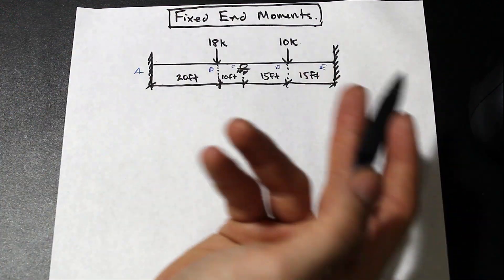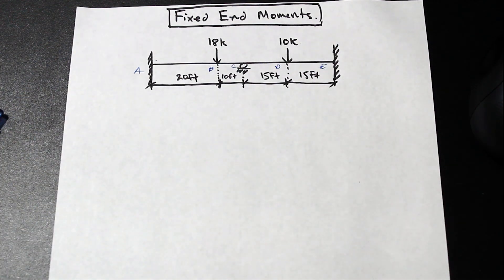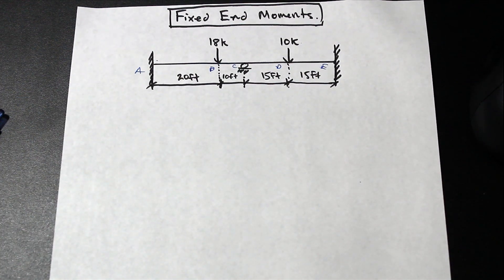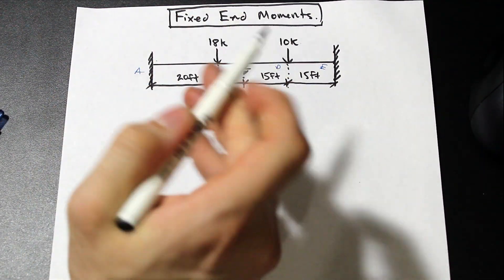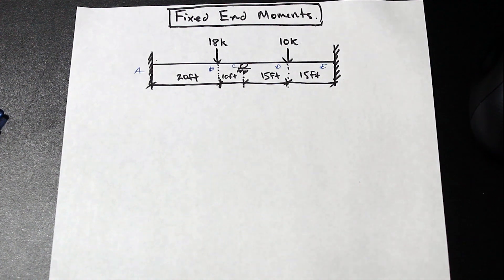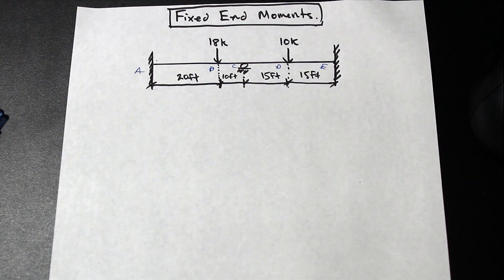So what are fixed end moments? Well, fixed end moments are when we take a beam and we assume that each section of the beam has two restrained ends, two ends that are restrained from rotation, and then we find the moments about those sections.